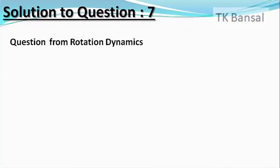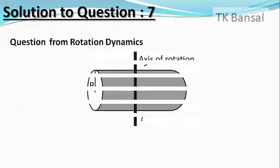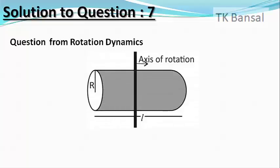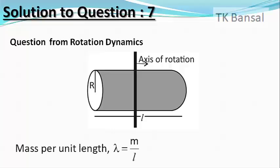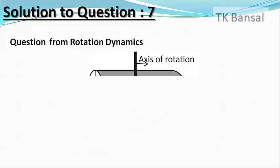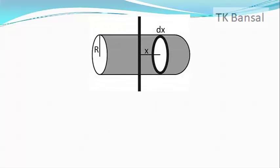It is a rather difficult question from rotation dynamics and involves one integration and one differentiation. Although the moment of inertia of a number of objects is known to us, the moment of inertia of this cylinder of length L and radius R is to be determined using integration. Since the rod is uniform, its mass per unit length λ is given by λ = M divided by L. Let us divide this rod into a large number of thin disks and consider a thin disk of thickness dx at a distance x from the axis of rotation.